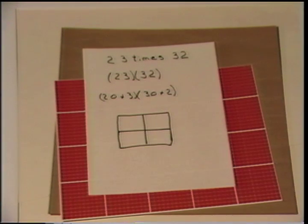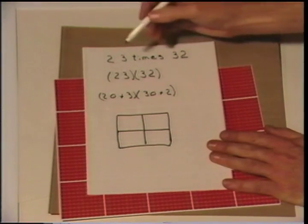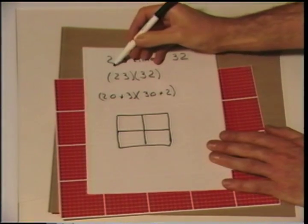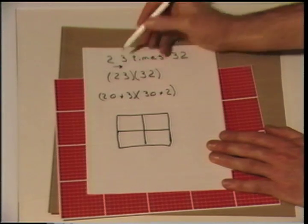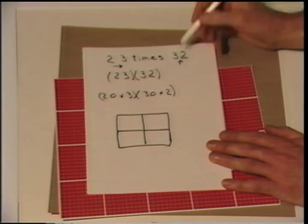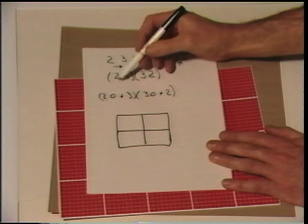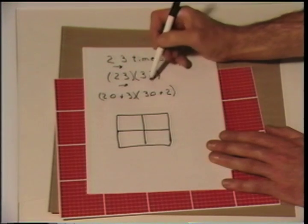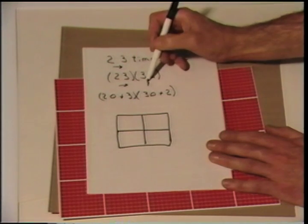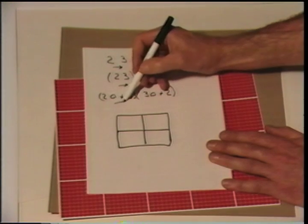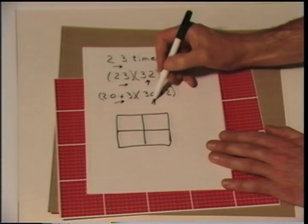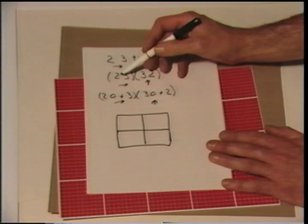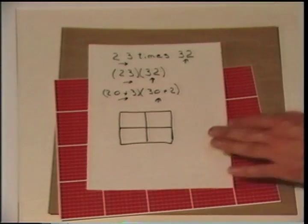Let's do another multiplication problem — 23 times 32. That means we're given the factors: 23 over, 32 up. We could call factors also dimensions — the dimension over, the dimension up — or distance over, distance up. And here we wrote our shorthand into longhand.